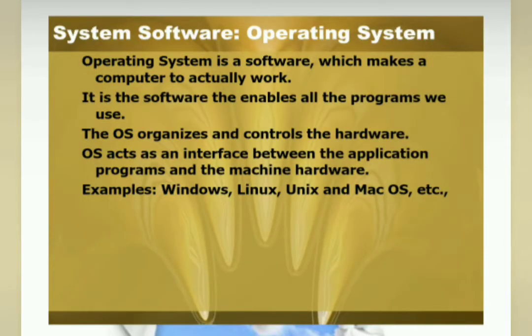The operating system is software which makes a computer actually work. It enables all the programs we use. The OS organizes and controls the hardware, and acts as an interface between the application programs and the machine hardware. Examples include Windows, Linux, Unix, and Mac OS.